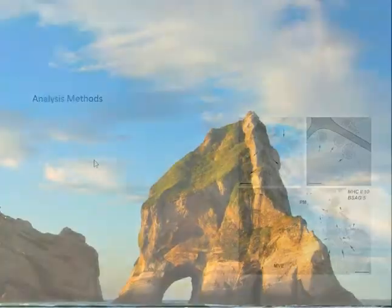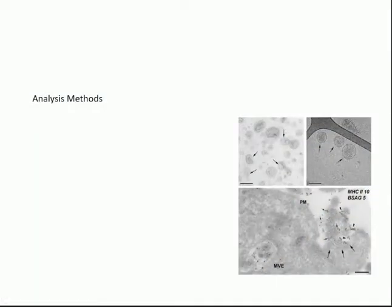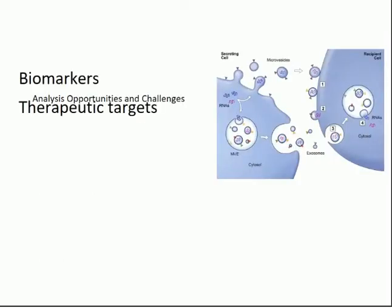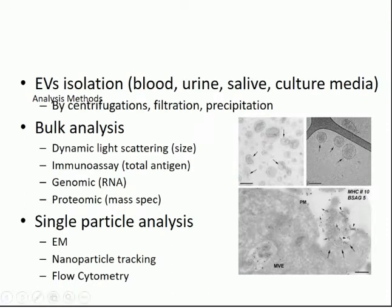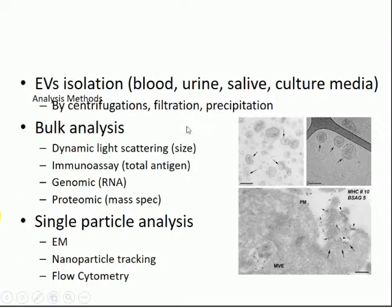These are the analysis methods mostly used to look at extracellular vesicles. We can isolate extracellular vesicles from different types of samples — from blood, saliva, culture media, and so forth — by centrifugation, filtration, or even precipitation. You can then perform a general analysis, like simple light scattering to see the size.